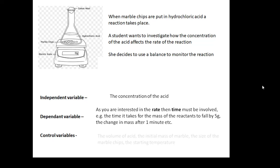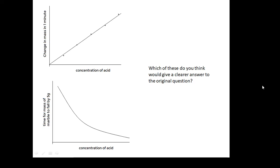Control variables. What will you keep the same? The volume of the acid. The initial mass of the marble. The size of the marble chips, because surface area will be important. The starting temperature. Which of these do you think would give a clearer answer to the original question? You've got the change in mass in one minute against the concentration of the acid on the first graph. And then the second graph, the time for the mass to fall by 5 grams against the concentration of the acid. Either graph would be acceptable. I think the first graph gives a clearer picture of what's going on.